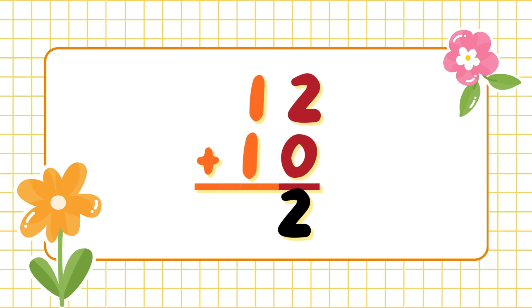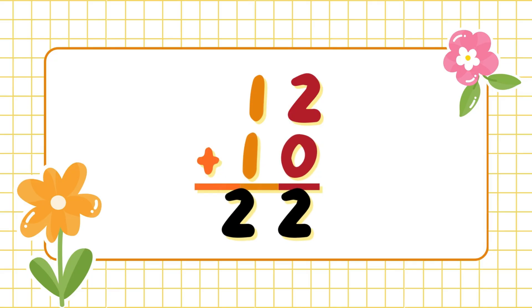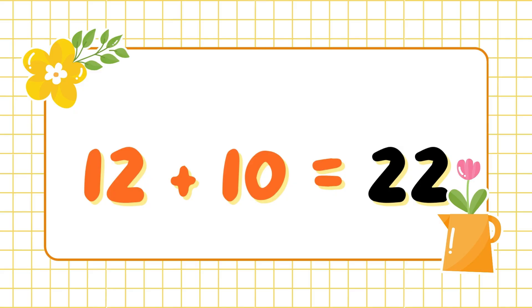Now what is one plus one? You can do this. So the answer is two, which means it makes 22. It's the same with the horizontal addition. So 12 plus 10 equals 22.